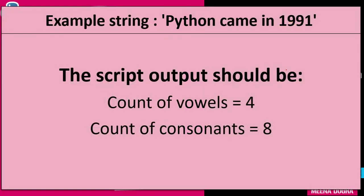Let's take one example. Suppose the example string is 'Python came in 1991'. Let's quickly mark the consonants: P, Y, T, H are consonants; N is a consonant; C is a consonant; M is a consonant; N is a consonant. Let's count how many — that's 8. So the second output of my code should be count of consonants = 8.